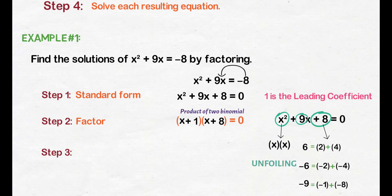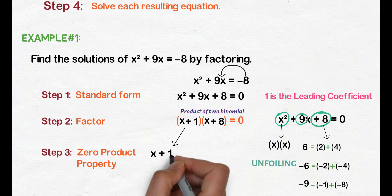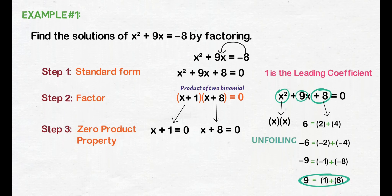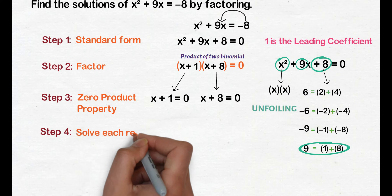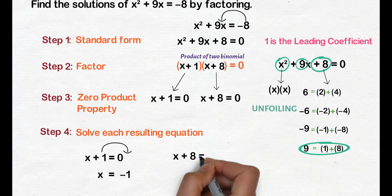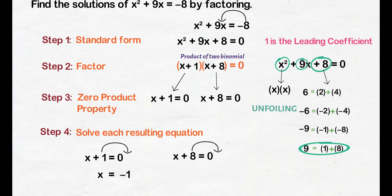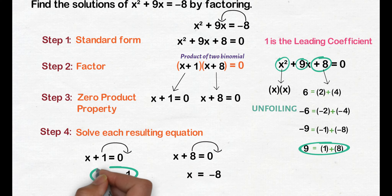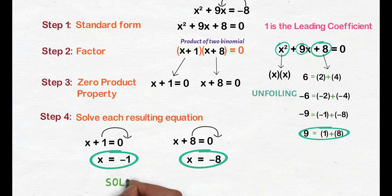Step 3, apply the zero product property by setting each factor equal to 0. We get x plus 1 equals 0 and x plus 8 equals 0. Step 4, solve each resulting equation. Unahin natin ang x plus 1 equals 0 — transpose 1 to the right side, we get x equals negative 1. Next, x plus 8 equals 0 — transpose 8 to the right side, we get x equals negative 8. So, negative 1 and negative 8 will be our solutions or roots.